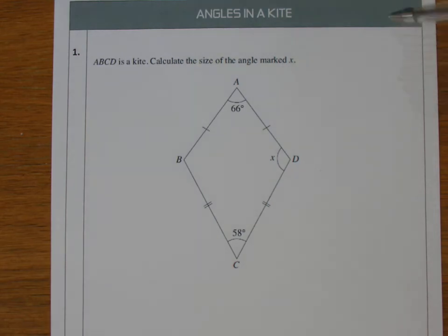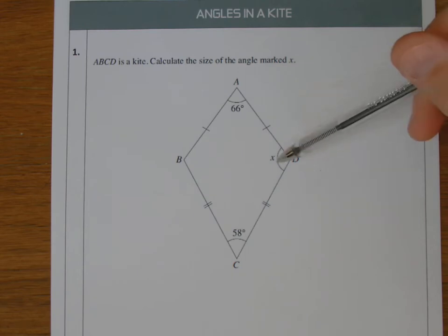Angles in a kite. So you've got A, B, C, D. Here's a kite. It says calculate the size of the angle marked X.